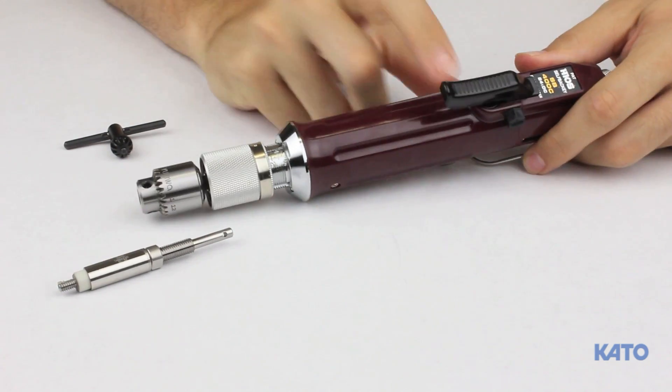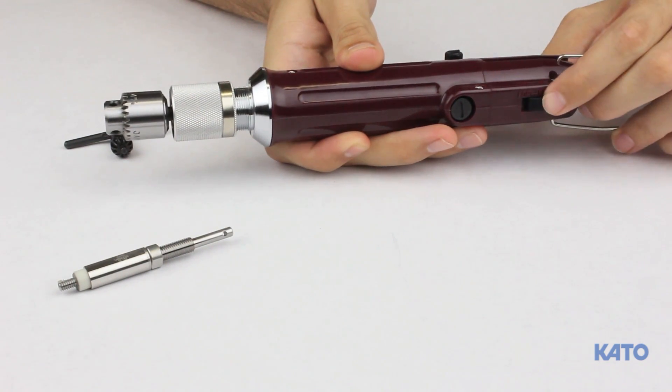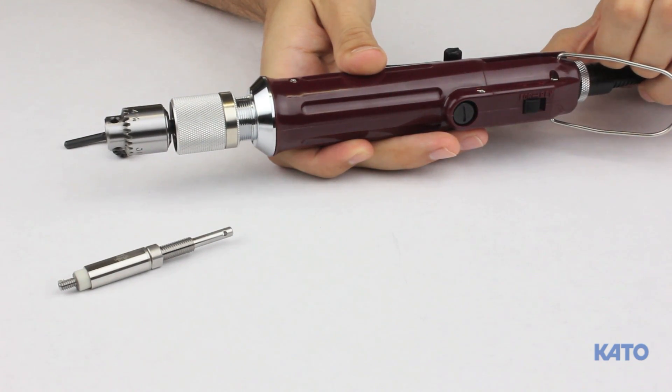Here you have the trigger. And on the back there is a switch for forward and reverse. This is an automatic reversing tool, but in case you ever need to use the manual reverse, here is the switch.